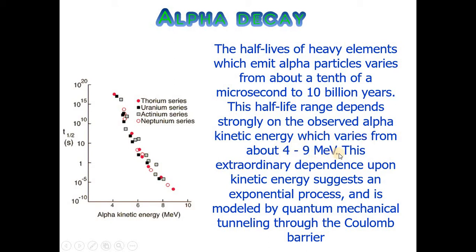Alpha kinetic energy varies from about 4 to 9 mega electron volts. This extraordinary dependence upon kinetic energy suggests an exponential process and is modeled by quantum mechanical tunneling through the Coulomb barrier. The behavior of alpha kinetic energy is shown in the image.